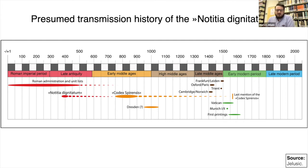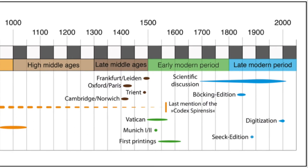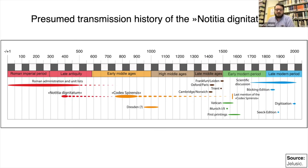If those first copyists had made the same decision as Trent, no one would ever have known that the Notitia Dignitatum was illustrated during the late Roman period. In the early modern period the last copies were made and bulk printing began. There is also the special case of the Munich versions one and two, which I will explain later. Then in 1566 the Codex Spirensis disappeared. Now the digitalization of all copies means anyone can work with these documents and compare them online from home.